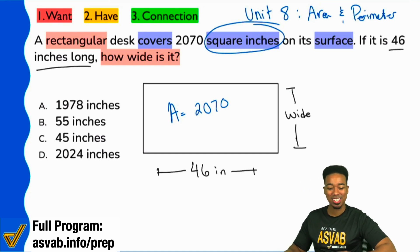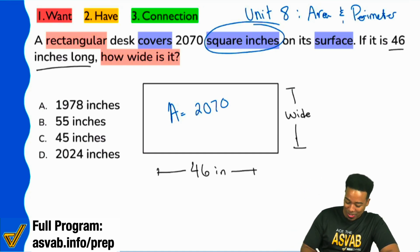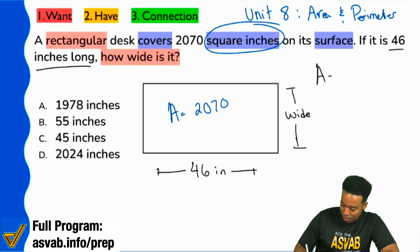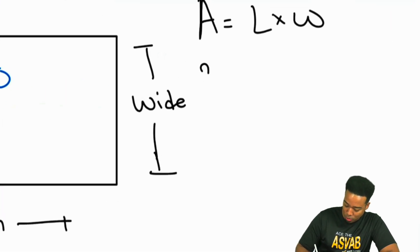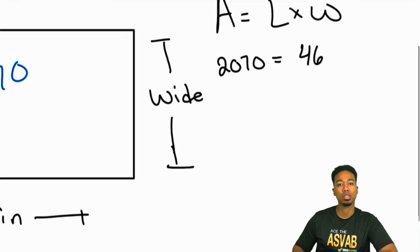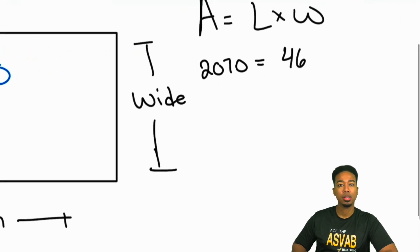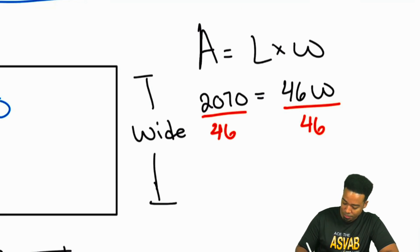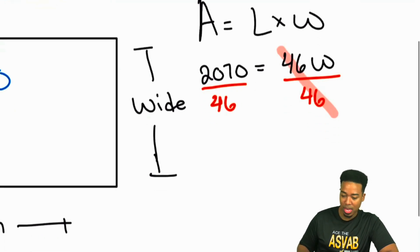All right, let's go ahead and let's finish this one up here. So what we need to do is we need to use that area formula, area equals length times width. And so what we'll say is, hey, the 2070 is equal to the length times the width, but the length we already have it as 46 right over here. So we're just plugging in what we have. And so to find the width by itself, we'll divide both sides by 46. Once we do that cancels out over here.